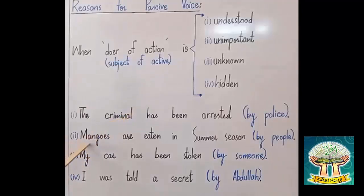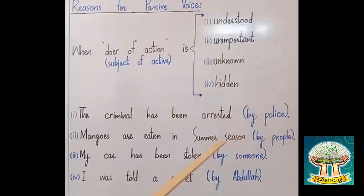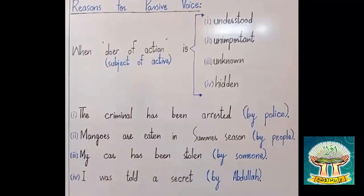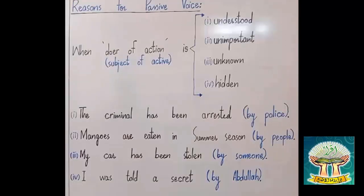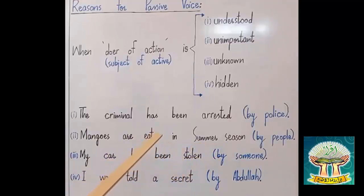Example number two: 'Mangoes are eaten in summer season by people.' The active sentence is: 'People eat mangoes in summer season.' It is unimportant to use the doer 'people' in this sentence, because obviously people eat mangoes — not walls, chairs or buildings. Since it is unimportant to state the subject, we make this passive: 'Mangoes are eaten in summer season.' The listener will understand by himself.